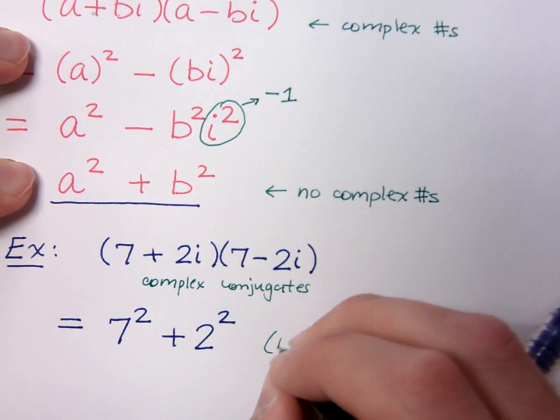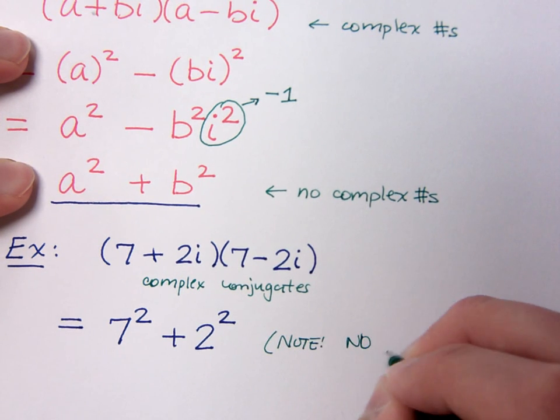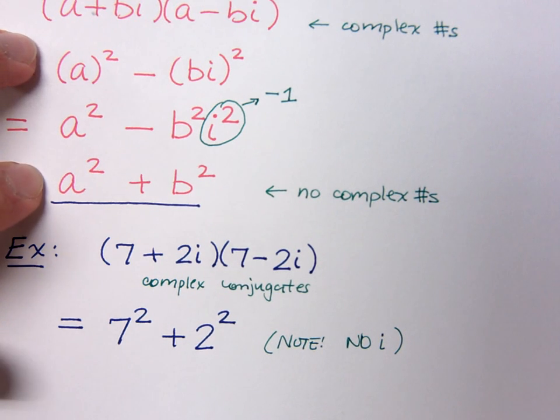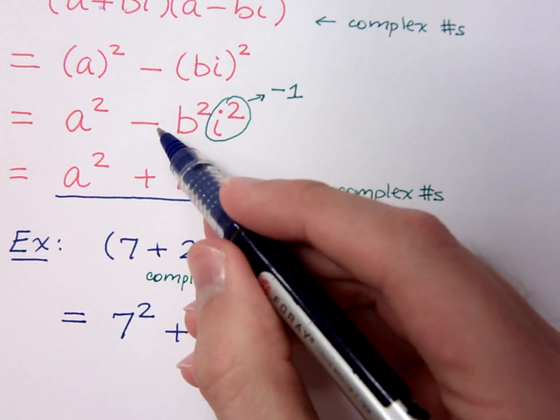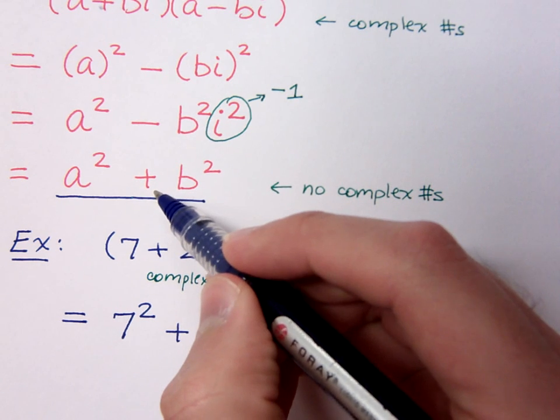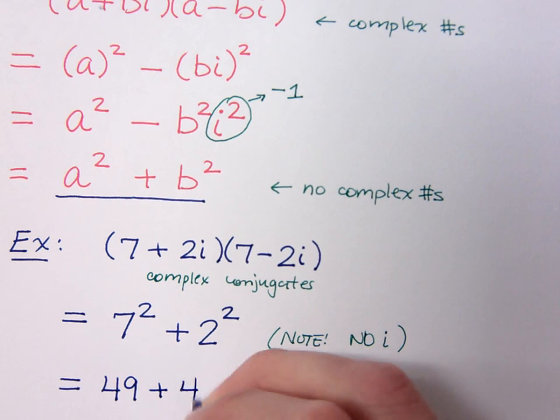Notice, please note, there are no i's. There's nothing imaginary, because what would have been i squared converted your difference into a sum. So we just do the easy math here. This is 49 plus 4, and that equals 53.